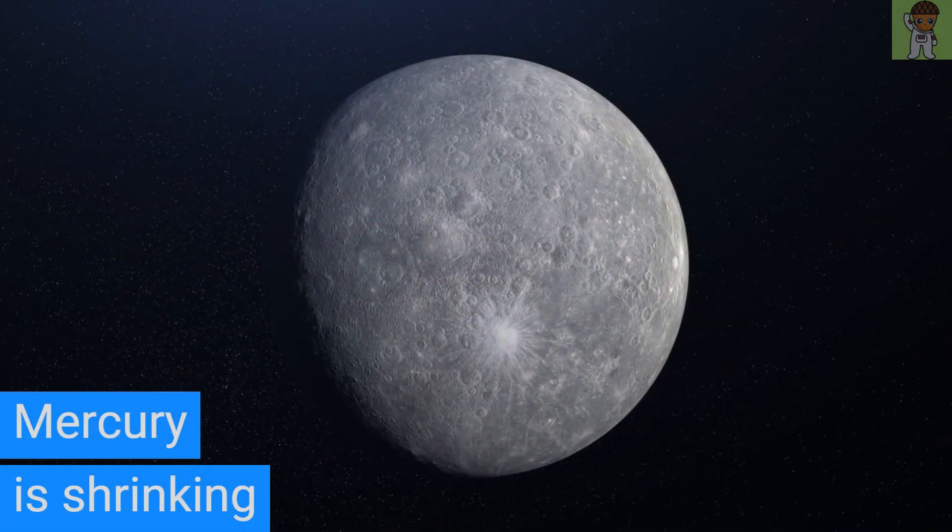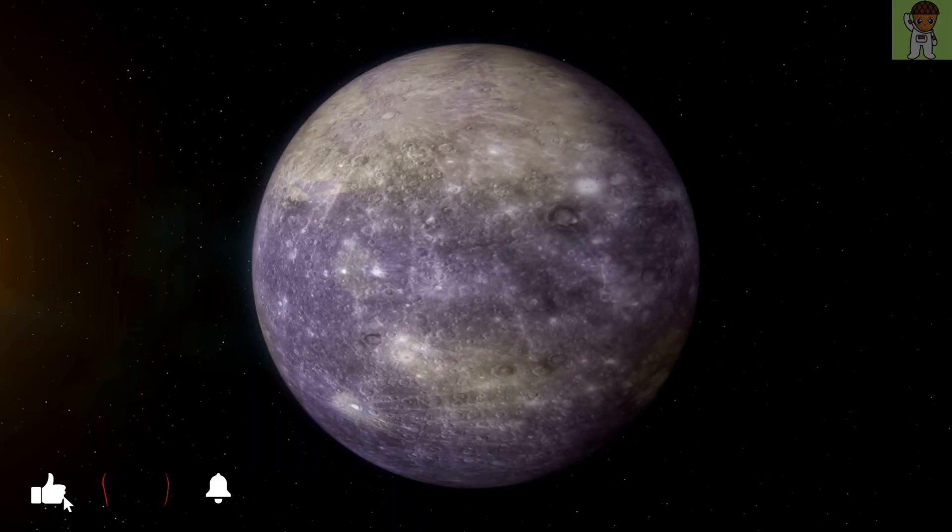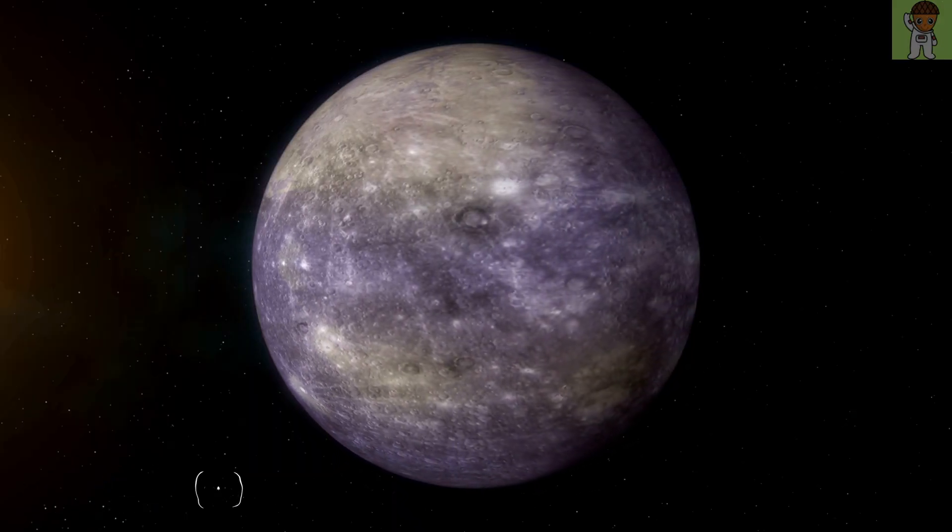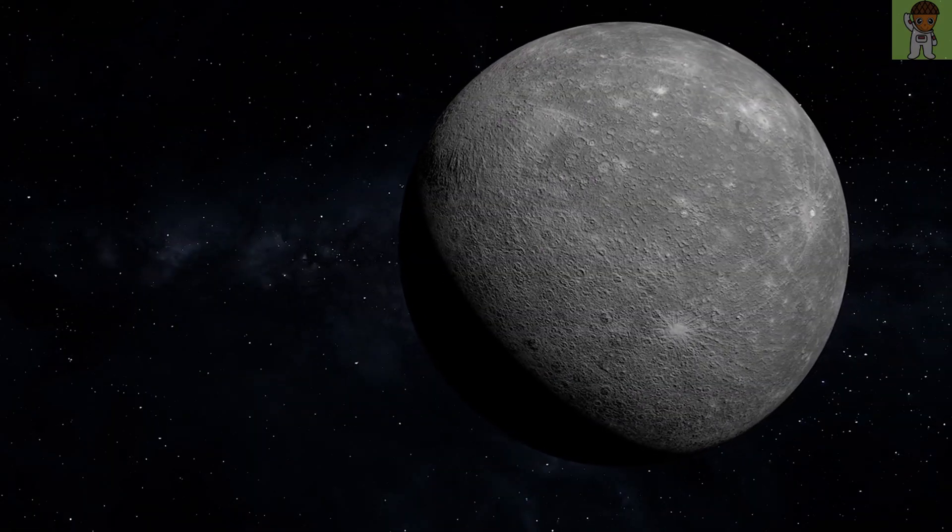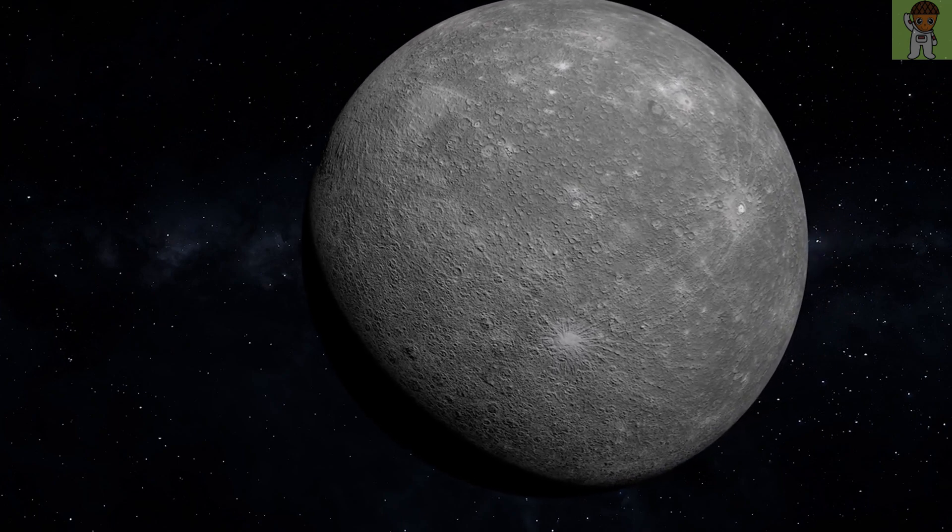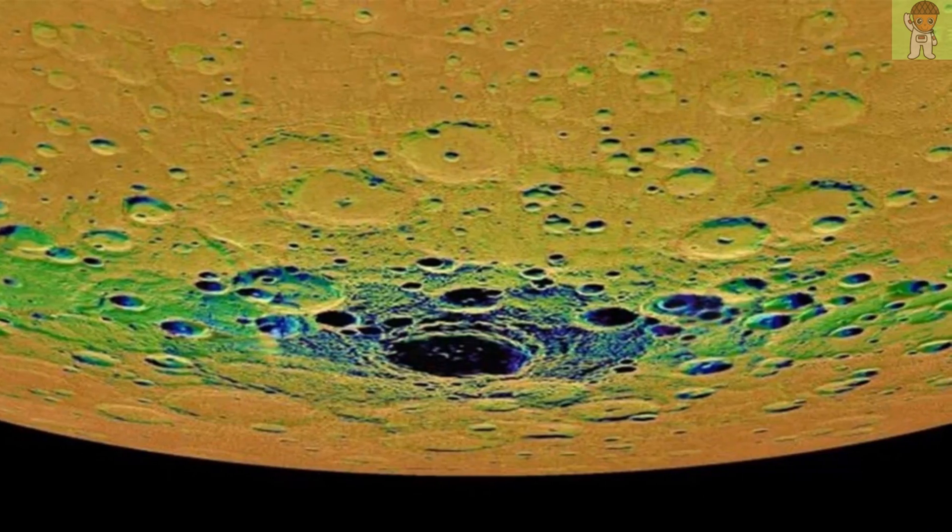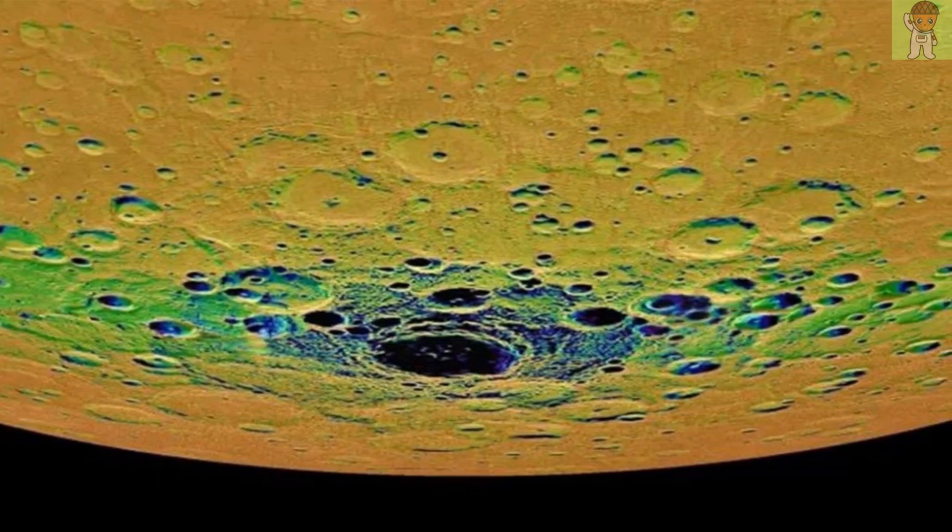Mercury is shrinking. Starting with the planet closest to the sun, Mercury, a study revealed that the solar system's tiniest planet might be getting even smaller. Experts have long known that Mercury has shrunk significantly since it first formed. Giant cracks known as scarps on the planet's surface were created as the planet contracted over long periods of cooling.